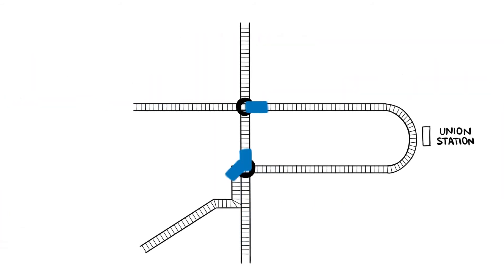The moving block approach permits transit operators to increase their line capacity by adding more trains than is possible under a conventionally signalled subway line.